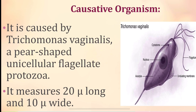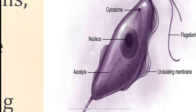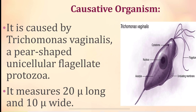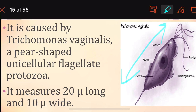The organism Trichomonas vaginalis is pear-shaped and unicellular. As seen in the picture, it contains a single nucleus in a single cell. It is a flagellated protozoan, with a length of 20 µm and width of 10 µm.